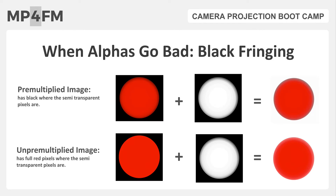One of the ways that alpha channels can go wrong is when it creates something called black fringing. Black fringing is a dark line around the shape you're cutting out with your alpha channel. It happens when you're working with pre-multiplied images and either you've created the pre-multiplied image wrong, or the software reading your image is interpreting it incorrectly. You can see an example of black fringing with this top red dot right here.